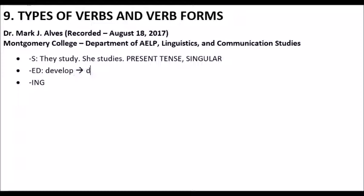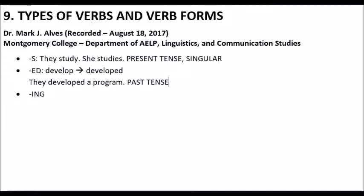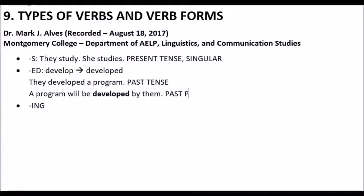Let's get an ED form. Develop, developed. We've said it has a past tense function — they developed a program — and that seems simple enough. But what if I do this: a program will be developed by them. This ED is not clearly in the past tense because it's will be. This is called passive, and we use past participle verbs for these.